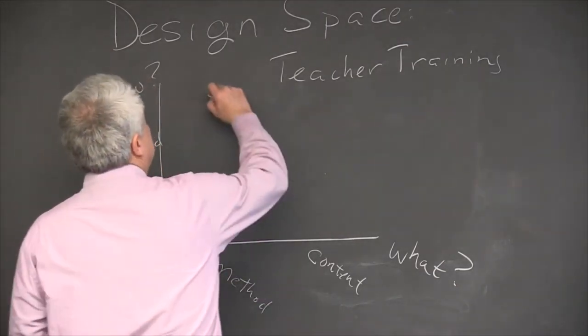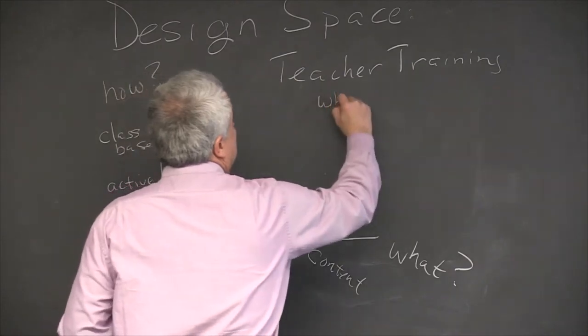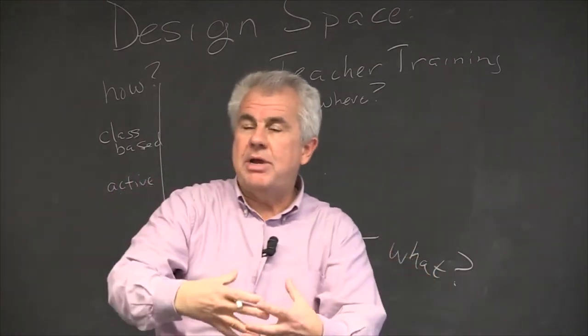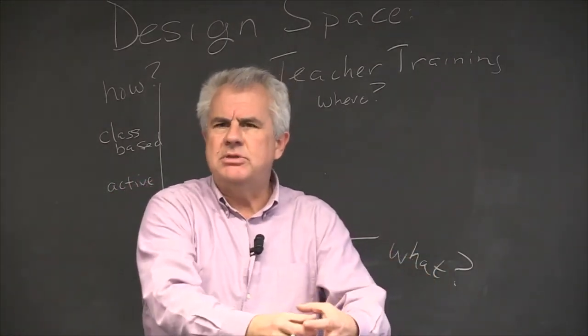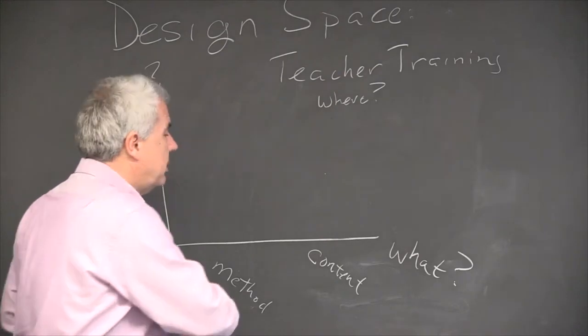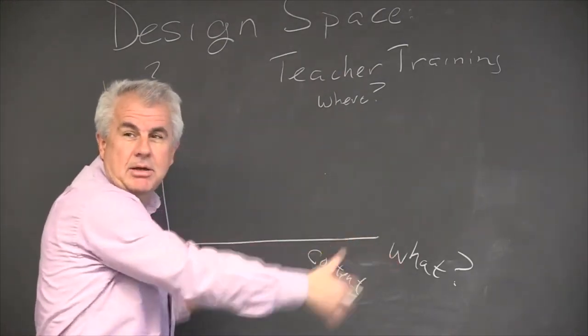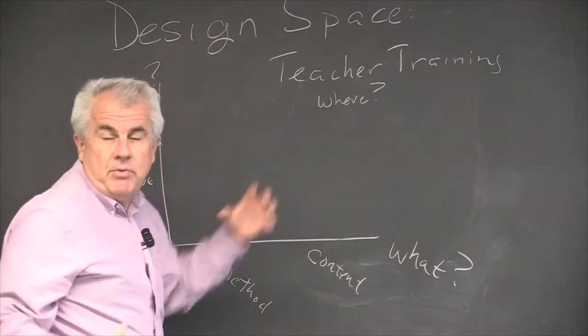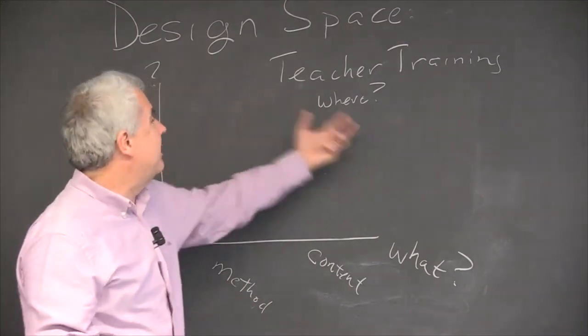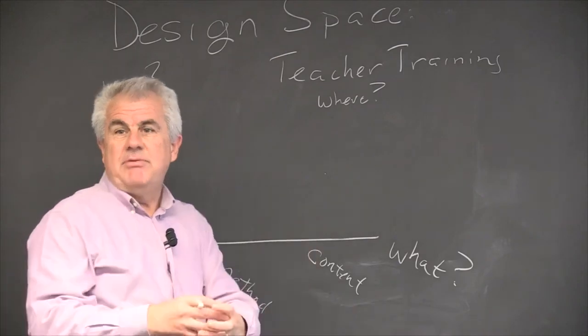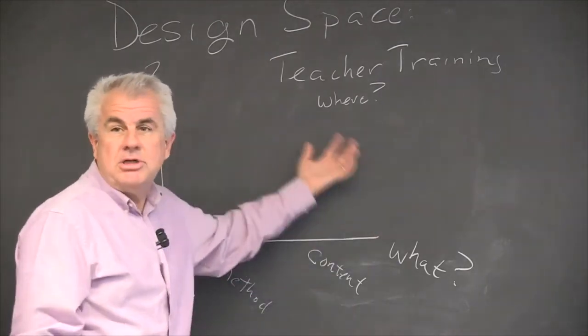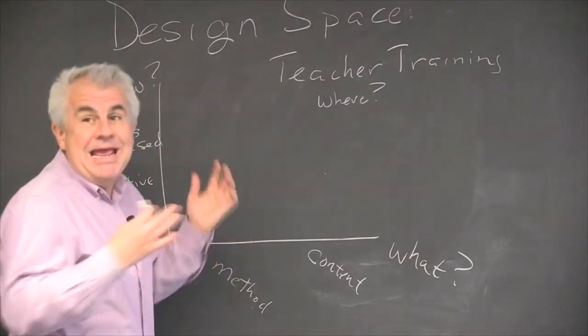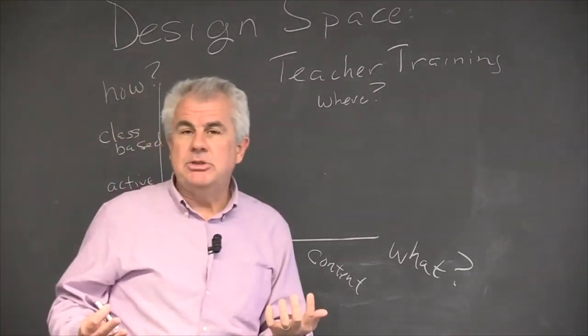Because then we could ask ourself the question, where? We could gather teachers from a large array of places and put them in one central site to help train them, or we can imagine distributing the training across large numbers of sites. There are advantages and disadvantages to both. If we concentrate, we can get the pedagogy the best because we have relatively few trainers. If we diffuse it, we have to have large numbers of agents. So now we can imagine not just four, but eight possible ways of doing teacher training.